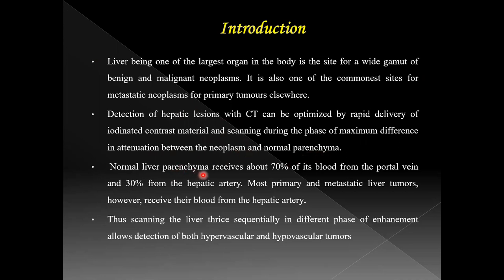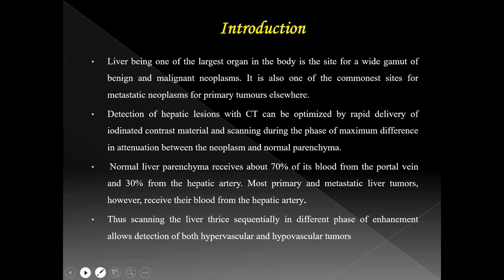Normal liver parenchyma receives about 70% of its blood from the portal vein and 30% from the hepatic artery. Most primary and metastatic liver tumors, however, receive their blood from the hepatic artery. Thus, scanning the liver sequentially in different phases of enhancement allows detection of both hypervascular and hypovascular tumors.